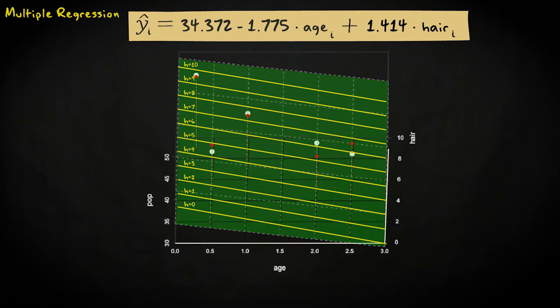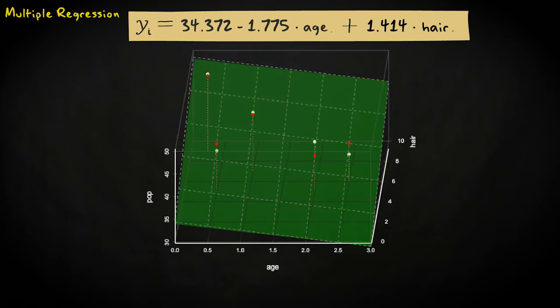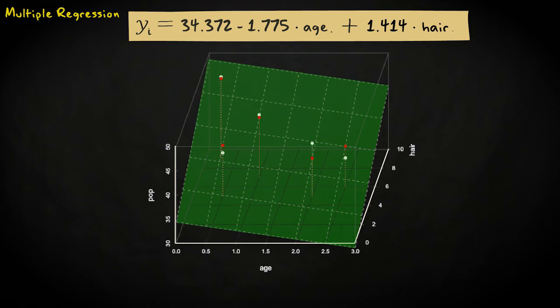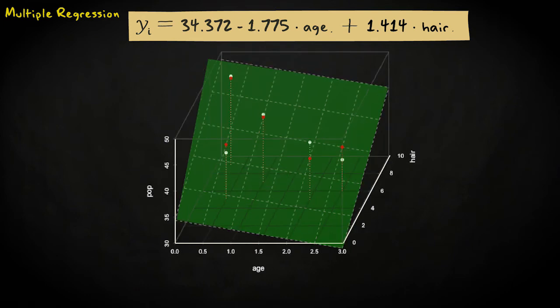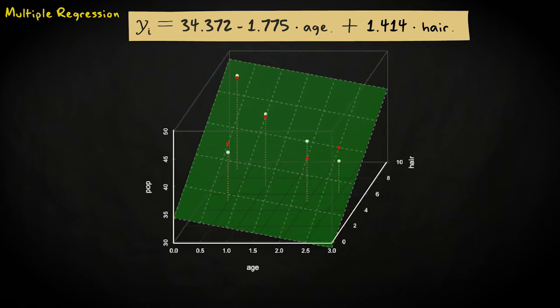We can visualize the entire model by adding another axis, the z-axis, to represent hairiness. You can see that the parallel lines now form a plane in a three-dimensional graph. This plane represents the predicted values produced by the model. The intercept A is where the plane crosses the y-axis. So the intercept A represents the predicted value when cat age and hairiness are both 0.